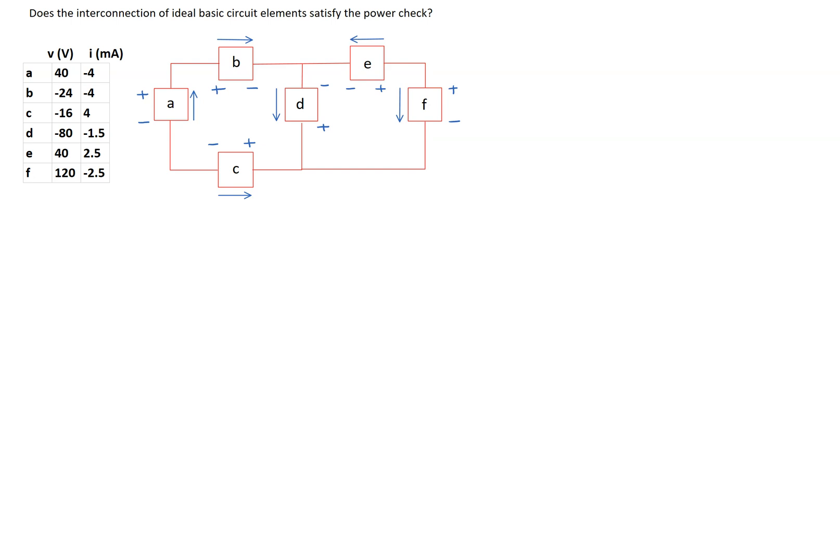The aim of this problem is to check if the given interconnection of ideal basic circuit elements satisfies the power check. In this figure, we have an interconnection of six ideal basic circuit elements. For each circuit element, the reference current direction and the reference polarity of the voltage is indicated. The values of the voltage drop across each element and the value of the current in each circuit element is given in this table.